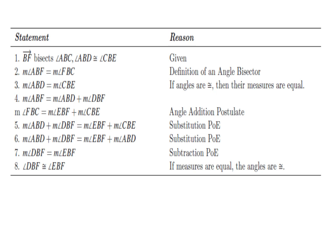Now with the measure of angle ABD on both sides of the equation, it cancels itself out on both sides. Statement 7 is the measure of angle DBF is equal to the measure of angle EBF.